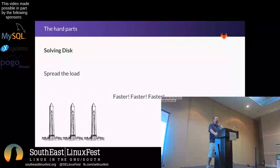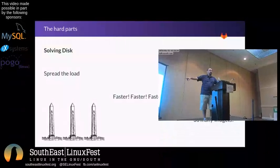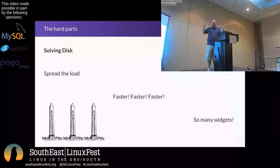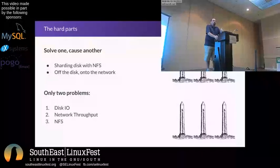SSDs — they're faster. But here's the problem: how do I get monoliths that have gone from one to two to three to multiplied by a hundred to all get those disks from all the places? We've solved the disk speed problem, but we haven't solved the problem of getting it everywhere. Solve one problem and cause another — now we don't have a disk bandwidth problem, we have a network throughput problem.